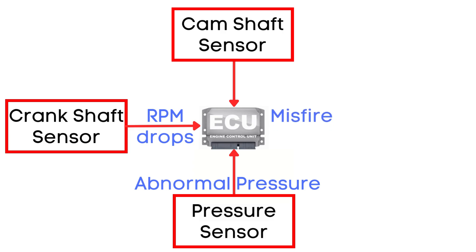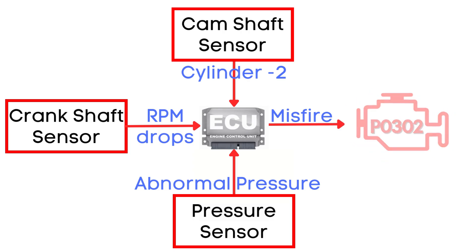This sudden change in signals from the sensors is what the ECU reads as a misfire. The Camshaft Position Sensor helps the ECU determine which specific cylinder is experiencing the misfire. And that's how the P0302 trouble code is triggered.